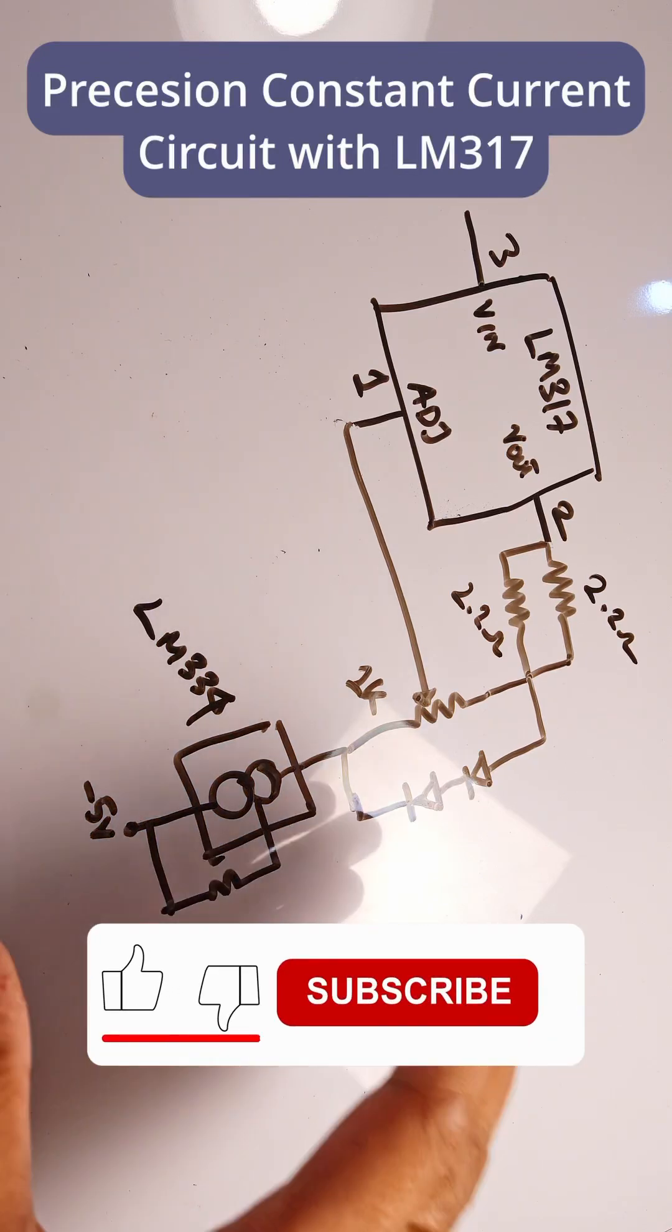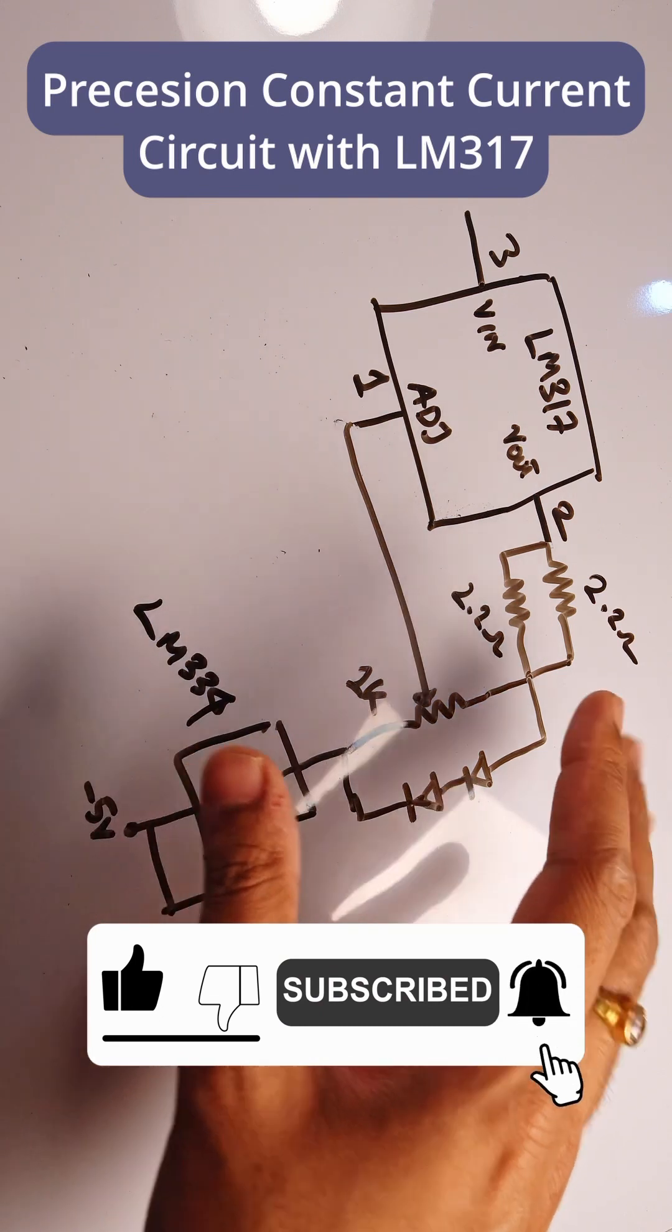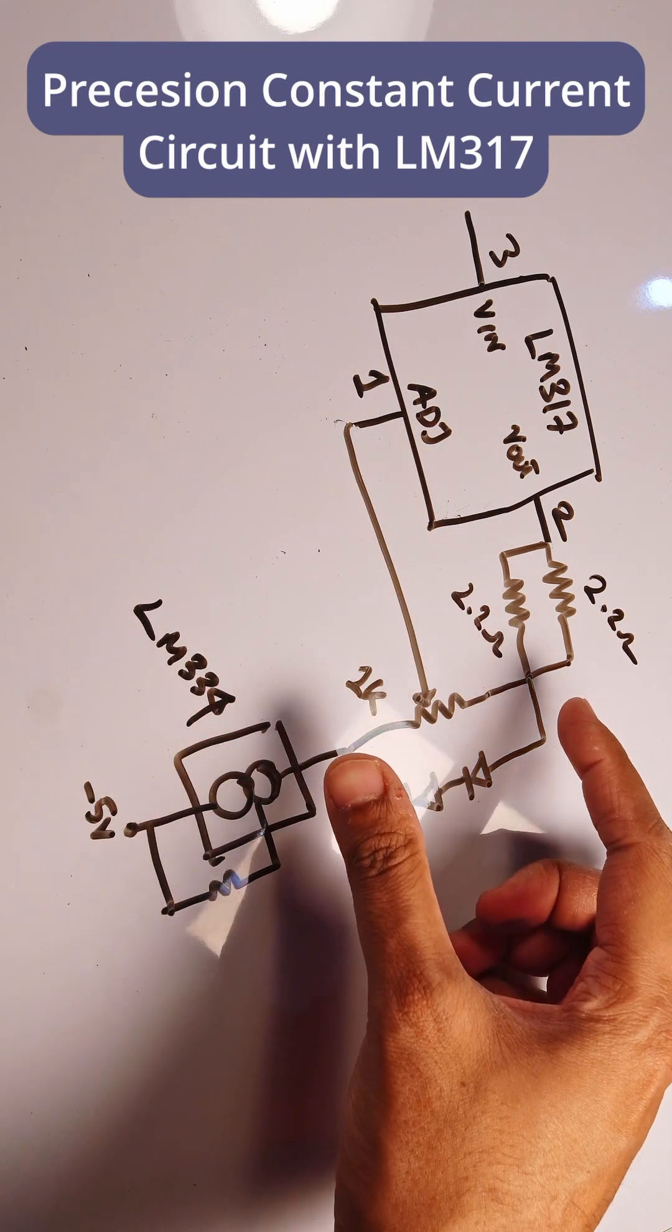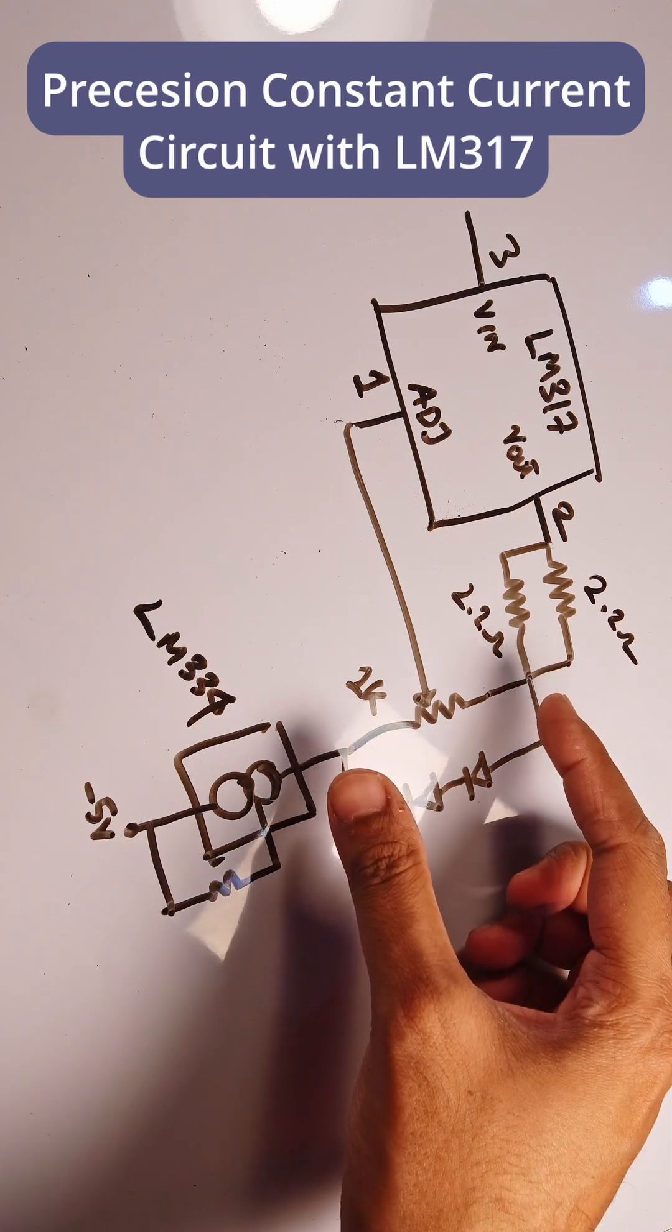So this is our current limiting circuit, let me explain it to you. It is very simple to explain. The main goal of the circuit is to provide a constant voltage of 1.25 volts across this potentiometer such that we can vary the voltage from 0 to 1.25 volts.